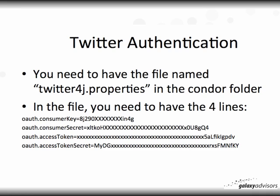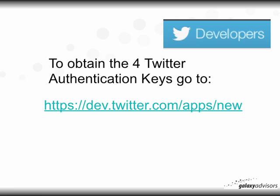Now let's get to obtaining your Twitter authentication. You need to have the file Twitter4j.properties in the Condor folder with those four lines. To obtain the four Twitter authentication keys, go to https://dev.twitter.com/apps/new. Again, these links are all in the 'show more' section of the YouTube video.